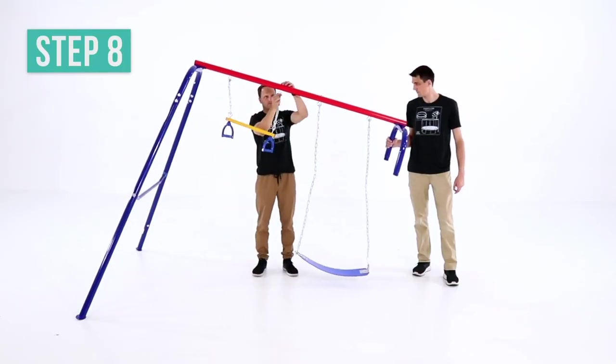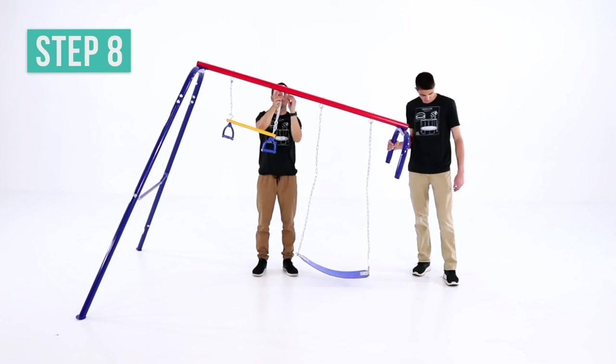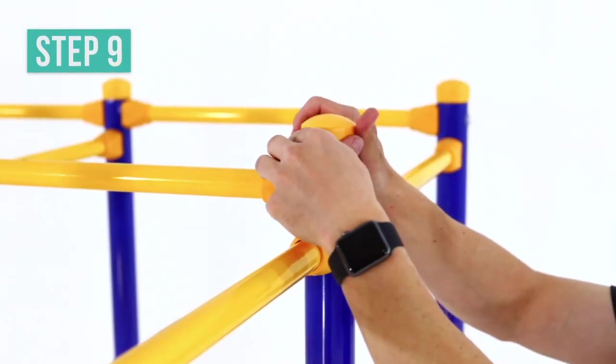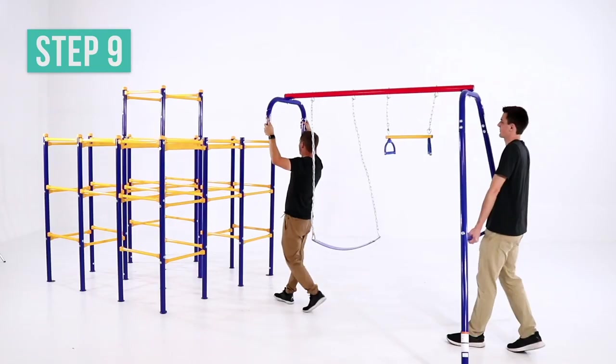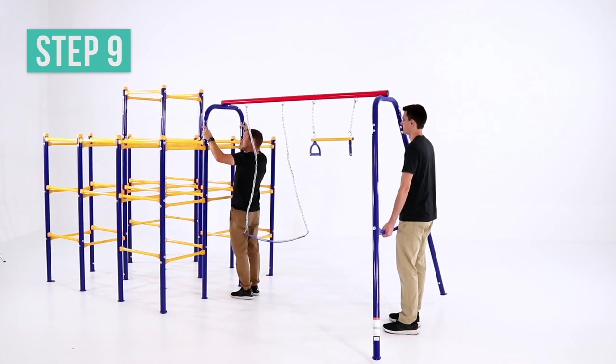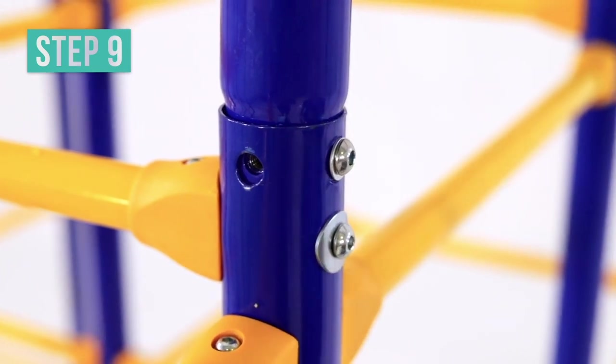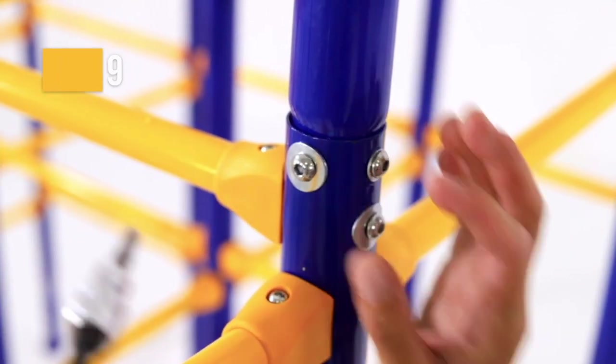Secure and tighten the flying ring to the top tube with arc washers and lock nuts. Remove two middle plastic caps from the top of the jungle gym. Attach the U-frame two to the jungle gym. Secure the front and back with button bolts and washers. Secure the sides with button bolts and arc washers.